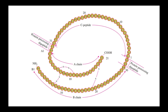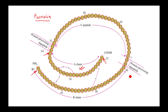As you can see in the image, this is the structure of proinsulin. Proinsulin contains three polypeptide chains: chain A, chain B, and the connecting chain C. Chain A runs from glycine to asparagine — a group of 21 amino acids. Similarly, chain B is a group of 30 amino acids.